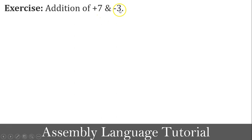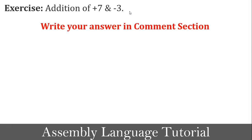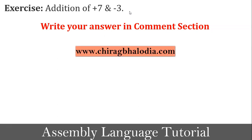There is one exercise for you: perform the addition of +7 and −3 using the 2's complement concept. The answer is 4, but you have to show the working. Calculate and write your answer in the comment section. The solution is available on my blog chiragbalodia.com — link is in the description.